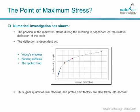What about this point of maximum stress? Numerical investigations have shown that the position of the maximum stress during the meshing is dependent on the relative deflection of the tooth. This deflection is dependent on Young's modulus, the bending stiffness of the tooth, and the applied load, which in turn allows us to produce a regression function where the relative deflection acts as a driver to calculate the positioning angle of the actual tooth the way it's supposed to be assembled in Abaqus CAE.